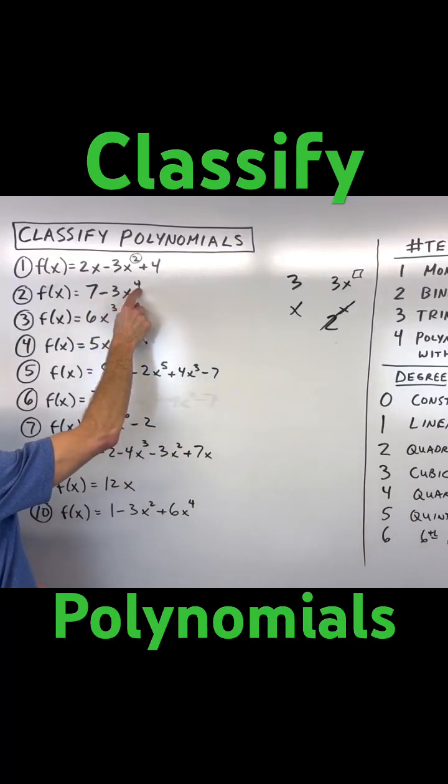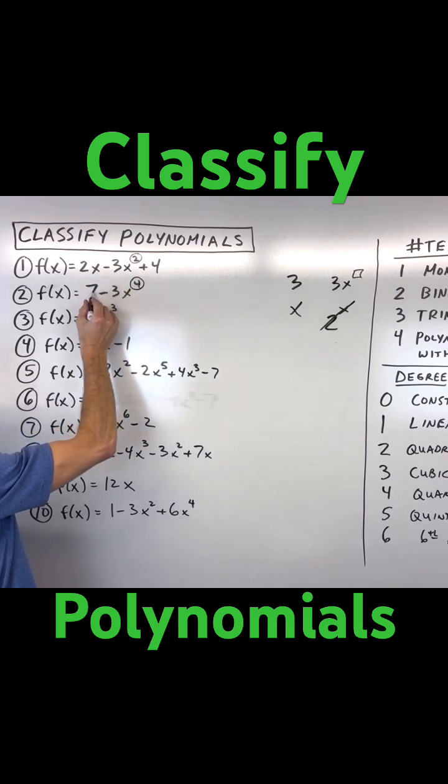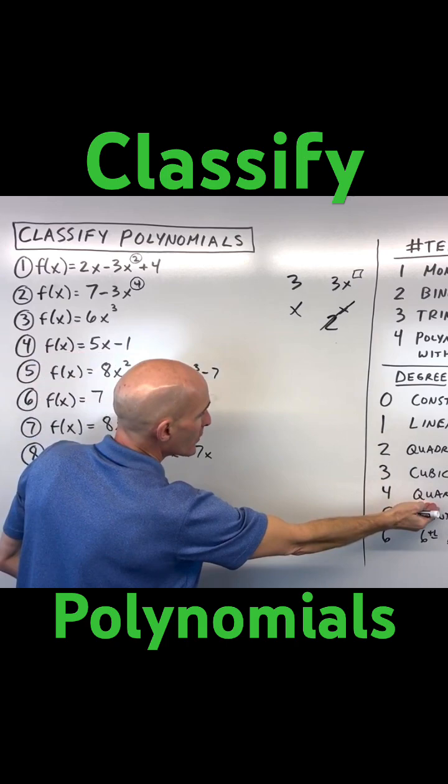Seven minus three x to the fourth power. Well again, you can see the highest exponent is four. This is like zero's degree, that's fourth degree. Four is the highest, so we're thinking quartic.